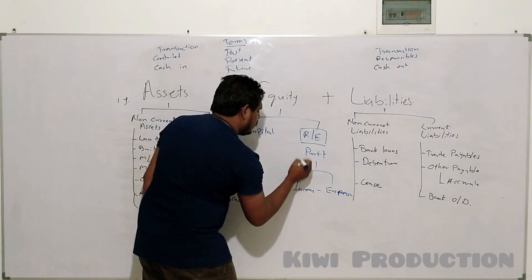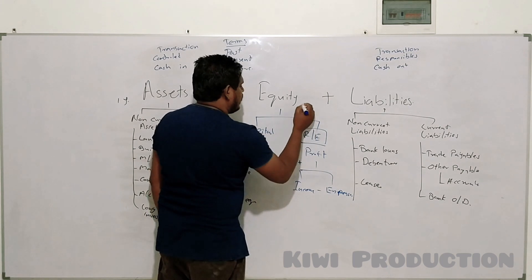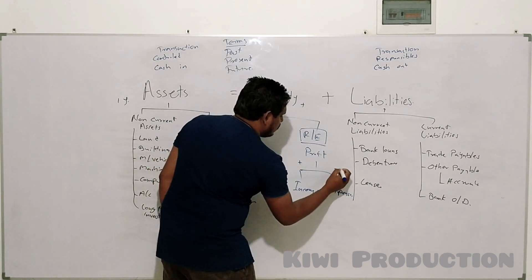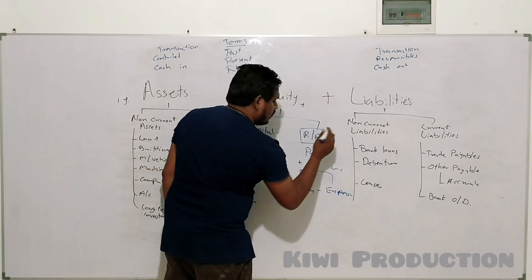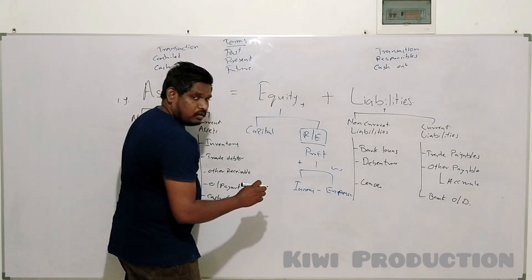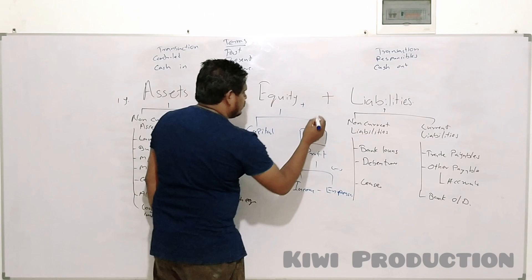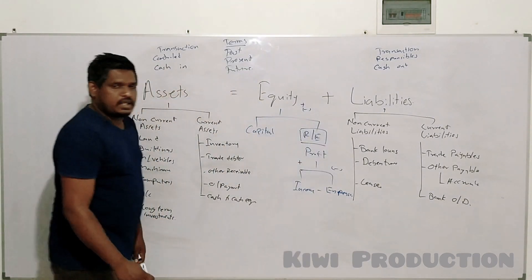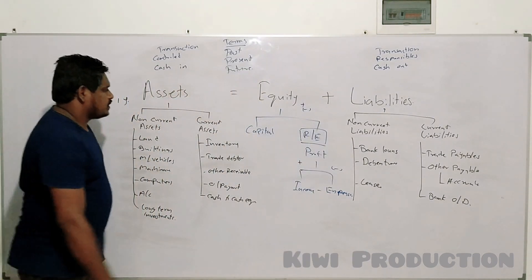Income increases profit and increases equity. Expenses decrease profit and decrease equity.